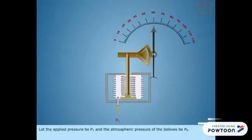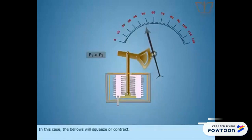Let the applied pressure be P1 and the atmospheric pressure of the bellows be P2. Case 1: When P1 less than P2, in this case, the bellows will squeeze or contract.